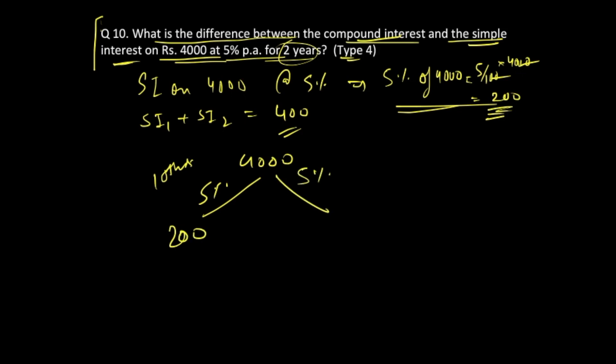For the next year, you do the same process: take 5% of the principal, which gives 200. But you also have to calculate 5% of the interest generated as well. This is the second year process. 5% of 200 equals 5 by 100 into 200. The zeros cancel out, giving us 10.